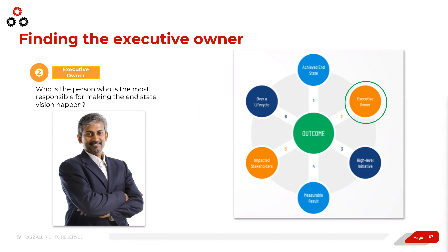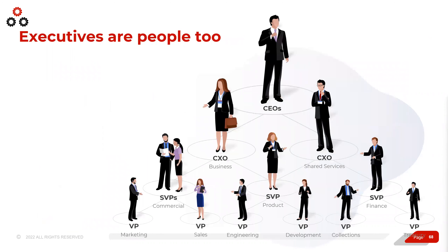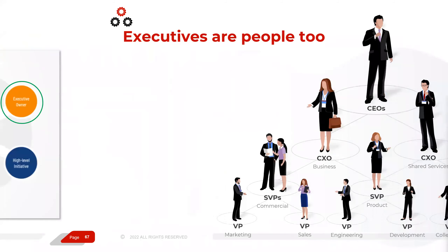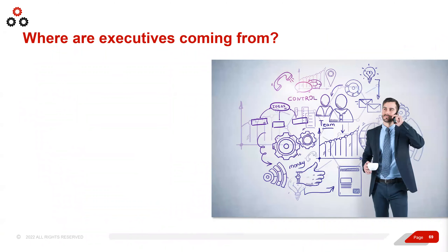How does that relate to your customers? Remember, executives are people too. You have to have empathy for them as leaders in the business. They're on the hook for a lot and they're accountable for results. They have a lot of commitments and accountability, and growth is one of them. So how do your outcomes support their growth initiative and their outcomes? How do you map and align? For executives to be successful, they have to drive the right impact, and the more empathy you have for what they're trying to achieve, the better.